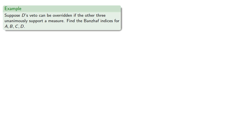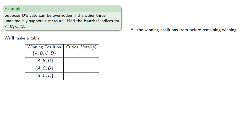Let's find the Banzhaf indices for A, B, C, and D. So again, we'll make a table that lists the winning coalitions and identifies the critical voters. And all the winning coalitions from before remain winning.